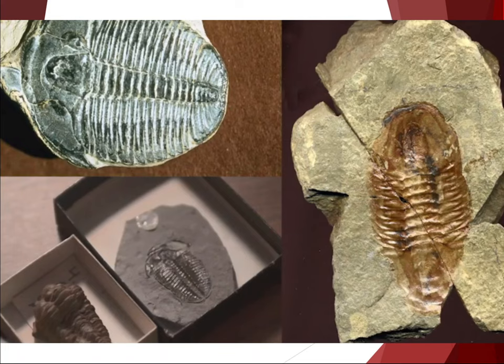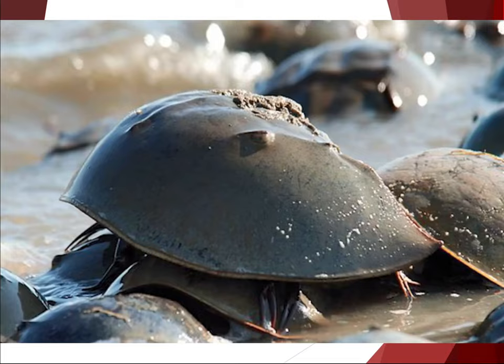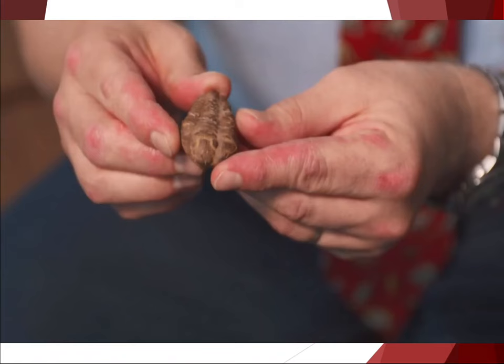Trilobites were arthropods, but they're nothing like any crustacean known today, save the horseshoe crab, a primitive creature that coexisted with trilobites as long as 445 million years ago. Arthropods grow by molting their skeleton, so any one individual trilobite could potentially produce a new fossil every time it grew because it would shed its skeleton. Because trilobites have very durable shells and each individual could produce multiple fossils, we know more about them than most types of ancient organisms.